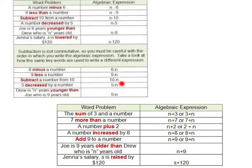Subtract a number from ten, five decrease by a number, Drew is in years younger than. Younger than n is going to be subtract Joe who is nine. Now these down here are going to mean addition.